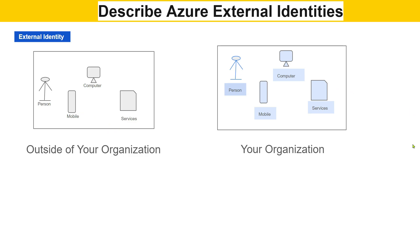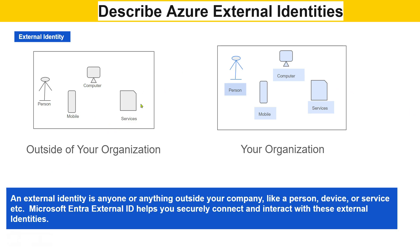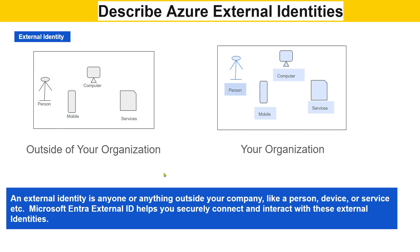An external identity is anyone or anything outside of your company — that could be a person, device, services, etc. Microsoft Entra External ID helps you securely connect and interact with these external identities. For example, if you are working with a vendor or you are a vendor working for another cloud organization and you want to access their applications, you need to have a user account created and given access to certain applications.